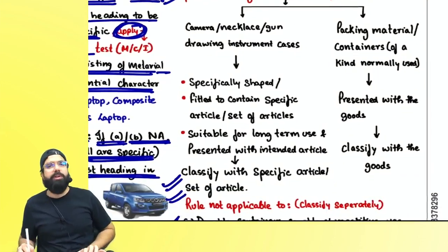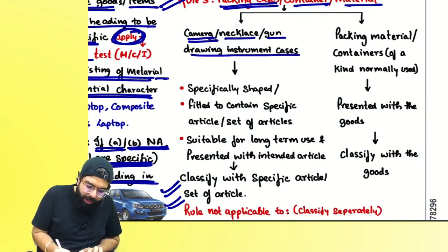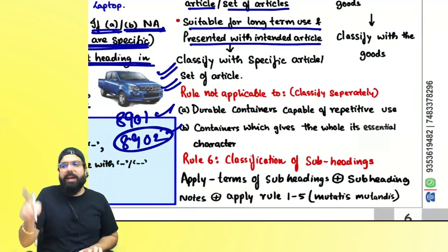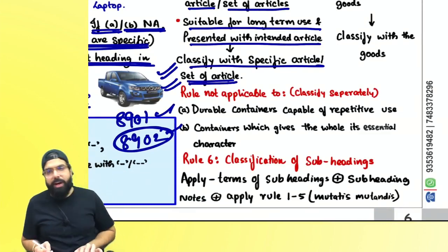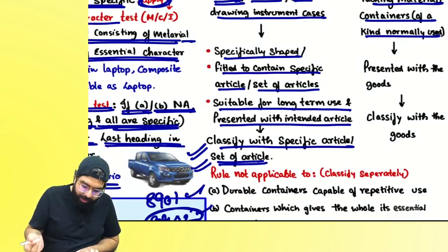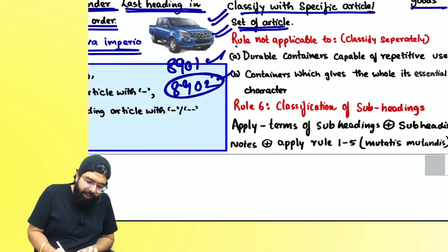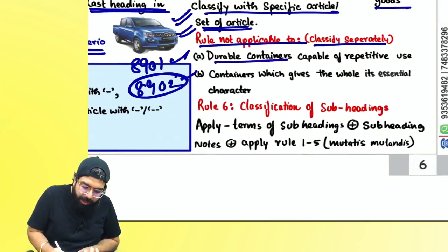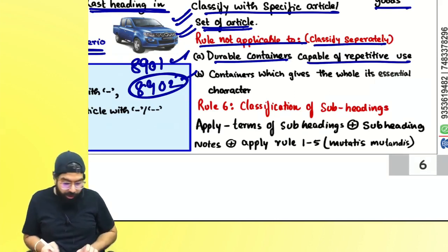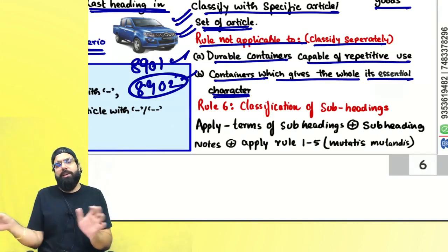Rule number five talks about packing material, packing pieces, containers or material. Packing cases — like a camera case, necklace case, gun case, or drawing instrument case — if they are specifically shaped or fitted to contain a specific article, suitable for long-term use and presented with the intended article, they are always to be classified with that specific article. If packing material or container is of a kind normally used (not for long-term), it is also classified along with the goods. However, if you have durable containers capable of repetitive use — like gas cylinders — they must be classified separately. Also, if a container gives the whole its essential characteristic (e.g., a gold case with a gun), the gold case and the gun are each classified separately.